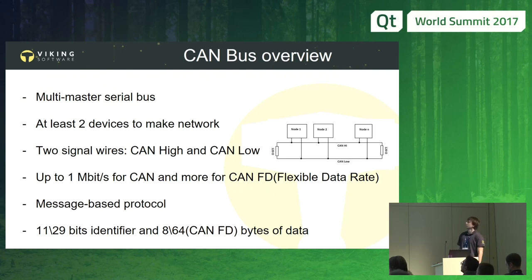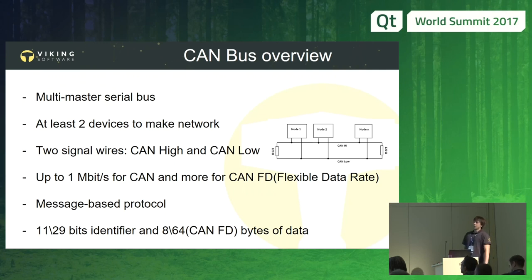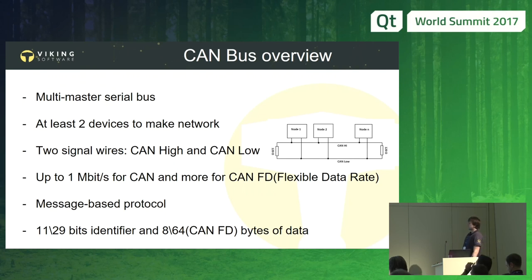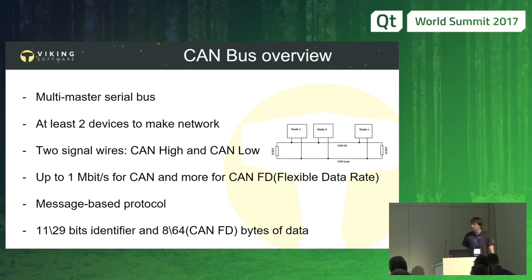CAN is a multi-master serial bus standard used to connect devices to a CAN network. You need at least two devices to connect and make it work. They are connected by two signal wires: CAN high and CAN low. Transmission speed is up to one megabit per second for CAN, or more for CAN FD — flexible data rate. It's a message-based protocol; all messages are called frames.